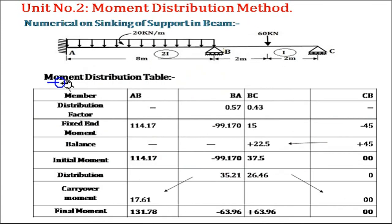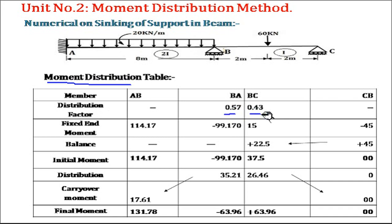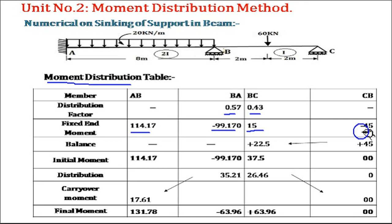Now we proceed to the moment distribution. The first row of the table lists the members: AB, BA, BC, and CB — the members of continuous beam ABC. The distribution factor for member BA is 0.57 and for member BC is 0.43. The fixed moments, considering both the sinking effect and the given load, are: AB = 114.17, BA = minus 99.17, BC = plus 15, and CB = minus 45.